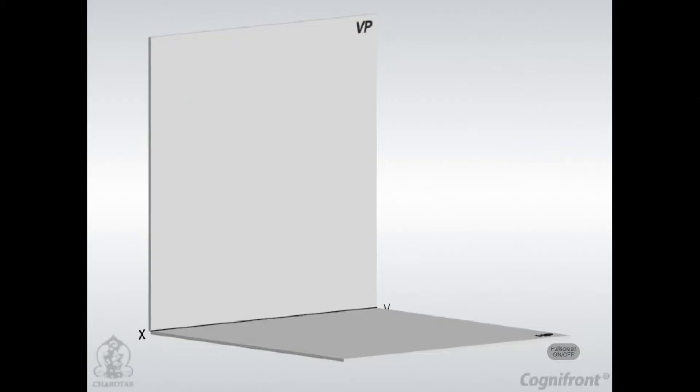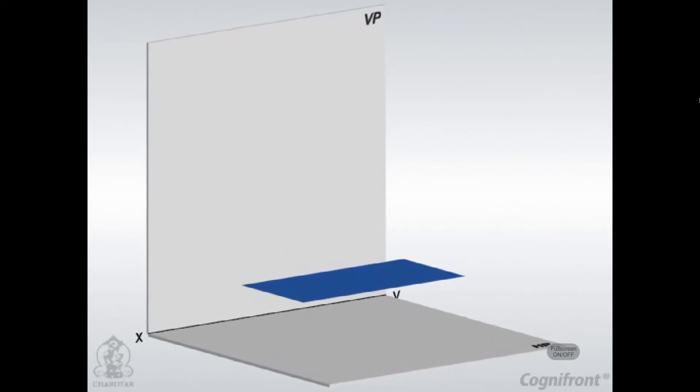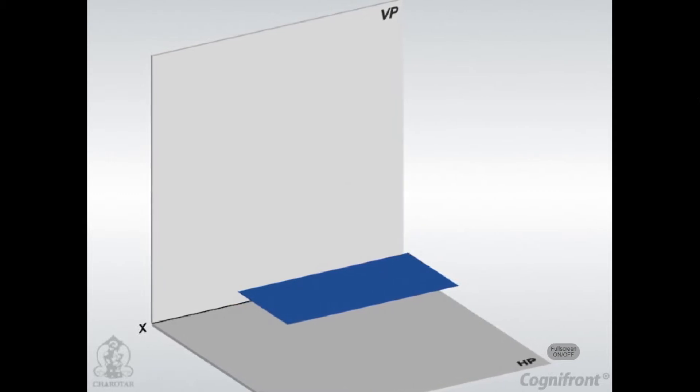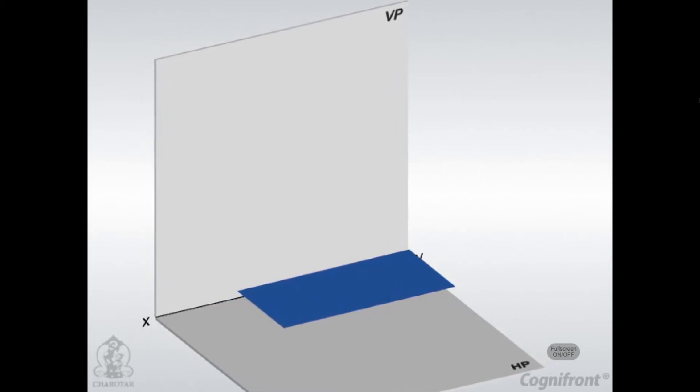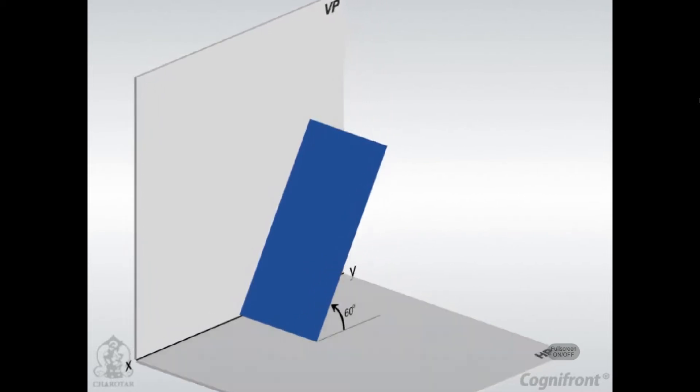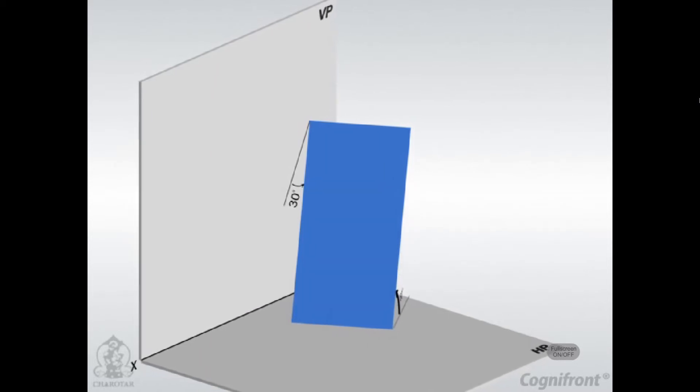Projections of a plane, problem 12.7. A rectangular plane surface of size L into W is positioned in the first quadrant and is inclined at an angle of 60 degrees with the HP and 30 degrees with the VP. Draw its projections.